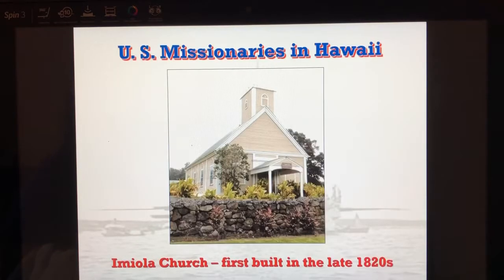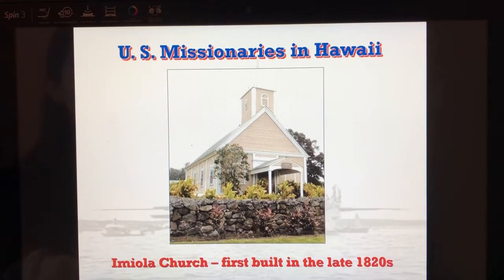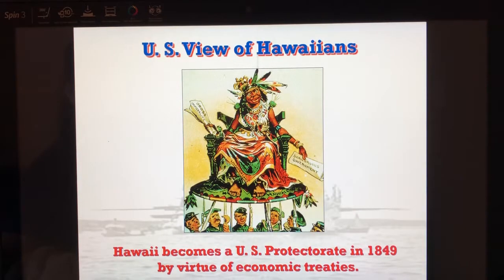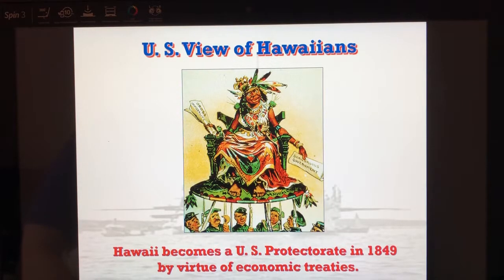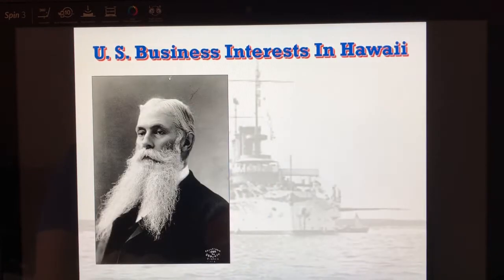The first area we really go into is Hawaii, under the Cleveland administration. We have a lot of U.S. missionaries going into Hawaii to bring religion to the people there. Many Americans are out there planting on the sugar plantations, and there is going to be a coup — Queen Liliuokalani will be overtaken by the American planters and the Marines stationed in Hawaii.